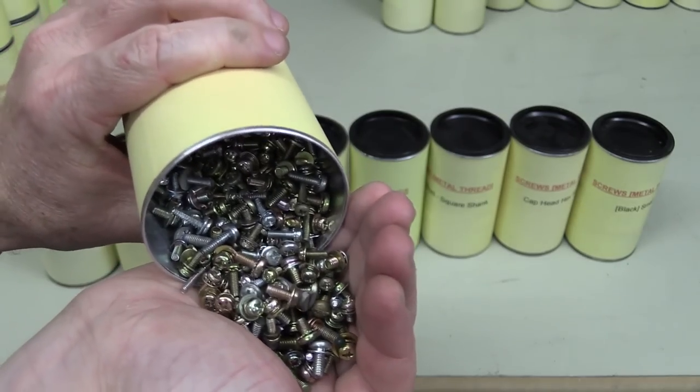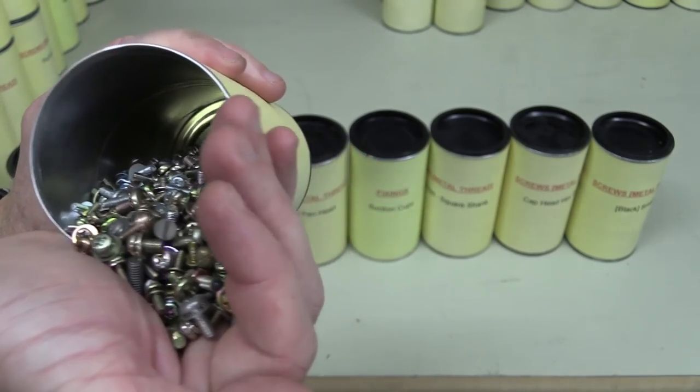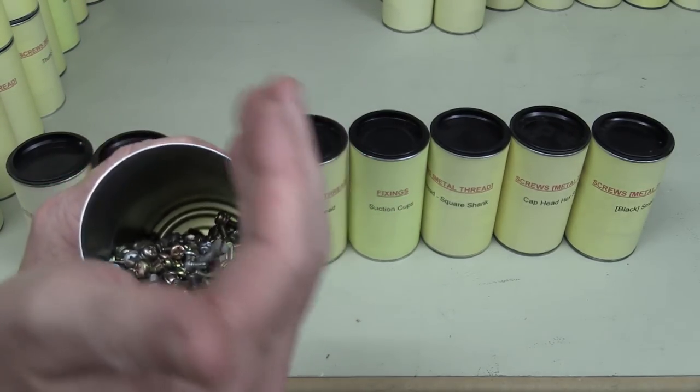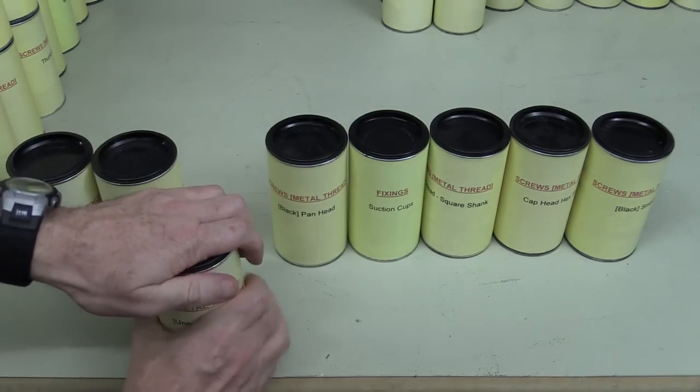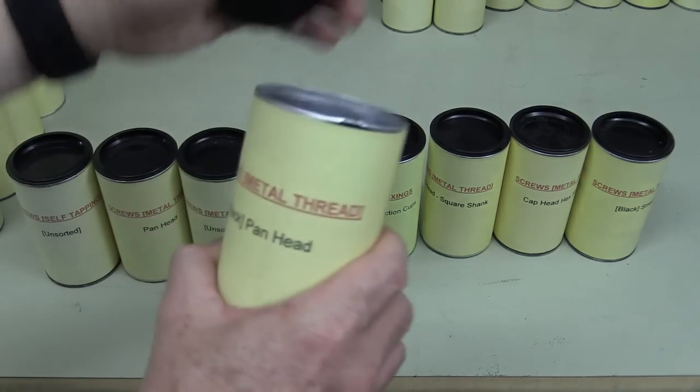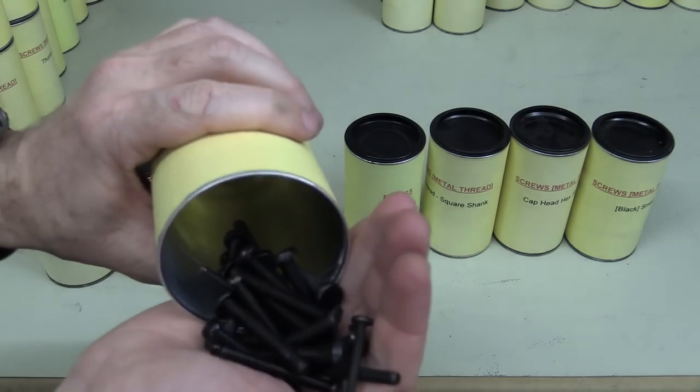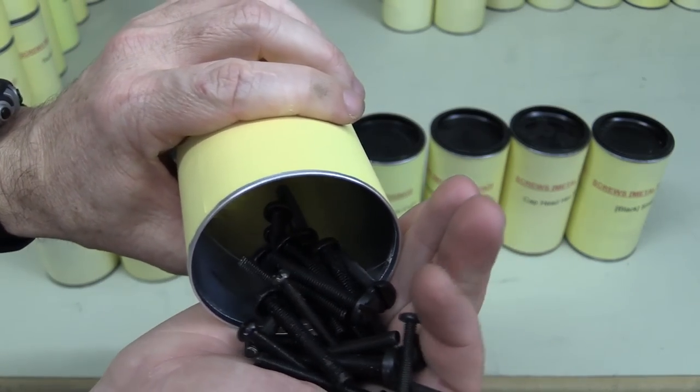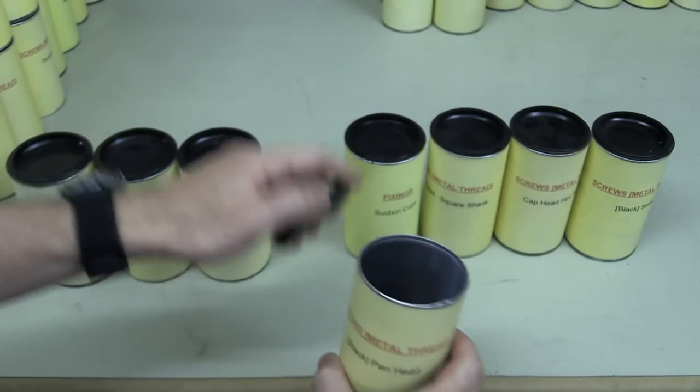Screws metal thread unsorted. Crikey, wow, that's just insane. Like are they all like, they're not even all like M3, they're just different different sizes. Unbelievable. Pan head metal through it, there we go, some nice Phillips and flat head mixed.